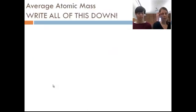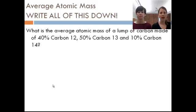So on the next slide, we're going to do a practice calculation of how to calculate the average atomic mass. I didn't underline everything on this slide because it's kind of hard to underline calculations, but I want you to write down everything that's on this slide so you have one complete example written down in your notes. So let's say we wanted to answer the question: What is the average atomic mass of a lump of carbon made of 40% carbon 12, 50% carbon 13, and 10% carbon 14?